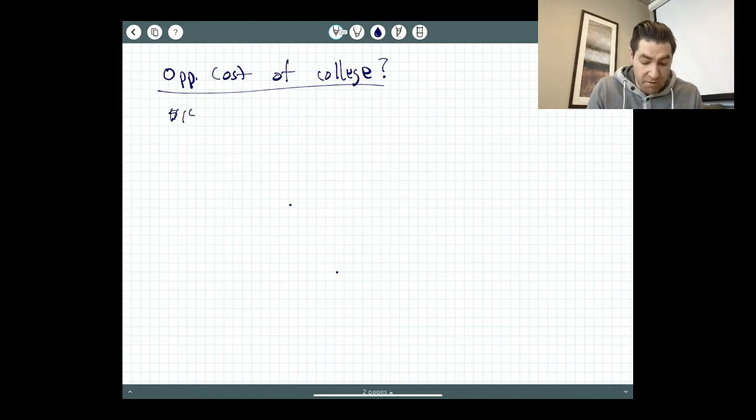Between tuition and room and board and fees and rent and all of that stuff, we'll just call it $15,000 to get a nice even number. It's probably, you can tell me from your experience whether that's high or low, but we'll call it $15,000 per year.